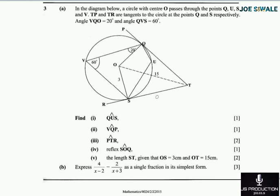As you can see, the diagram is shown in that way. The question proceeds. Find: number 1, angle QUS; number 2, angle VQP; number 3, angle PTR; number 4, the reflex of angle SOQ; number 5, the length ST given that OS equals 3 centimeters and OT equals 15 centimeters.